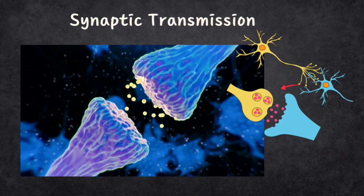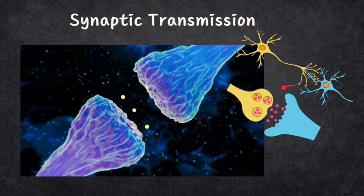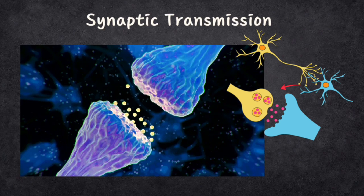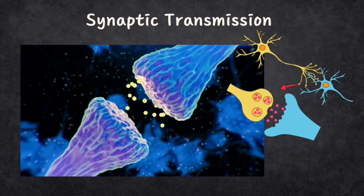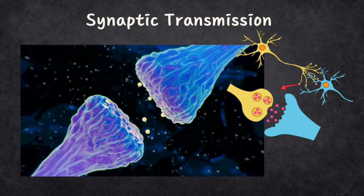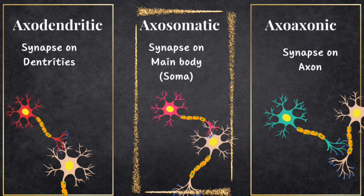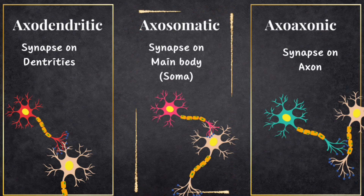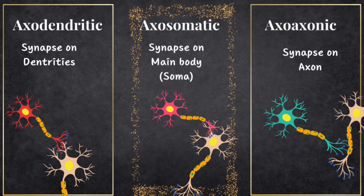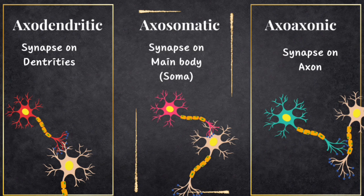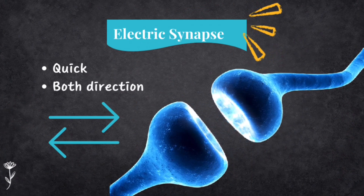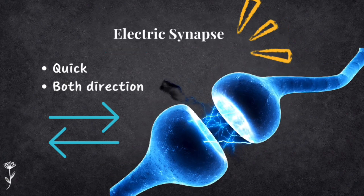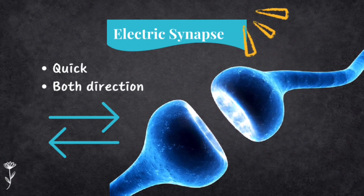As we discussed in the previous video, when an action potential — a signal — travels down a neuron's axon, it reaches the end which we call the terminal buttons. This is where one neuron meets another at a synapse. Think of a synapse like a meeting point between two friends. Synapses can happen in three places of the receiving neuron: on its branches called dendrites, the main body called the soma, or its own tail, the axon — so synapses can be called axodendritic, axosomatic, or axoaxonic. There are two kinds of synapses: electrical and chemical. Electrical synapses are like direct phone calls — neurons have channels that come really close to each other, making it easy for ions to pass from one to another. It's quick and goes in both directions, like a two-way street.